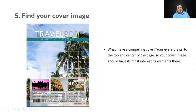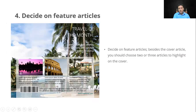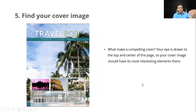Point 4: decide on feature articles. Besides the cover article, you should choose two or three articles to highlight on the cover. For those articles you decide on, you can choose two since there will only be five total. Those two will go on the front, with a small preview — not as detailed as the full article pages, just a little taste of the place.